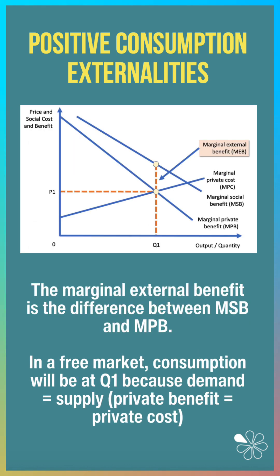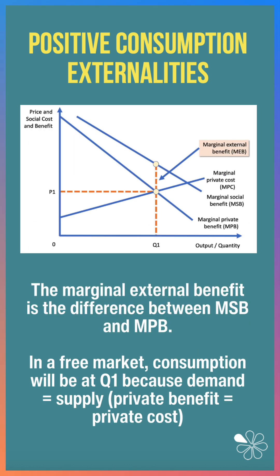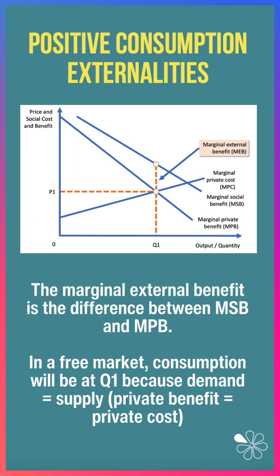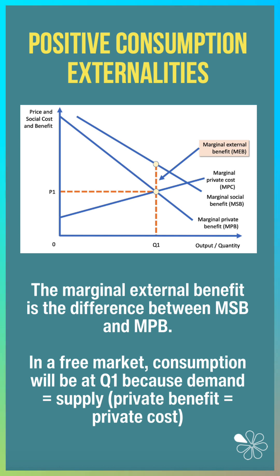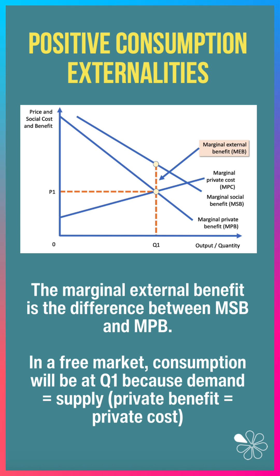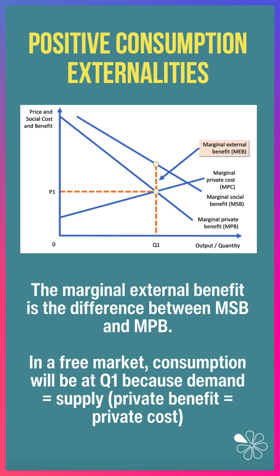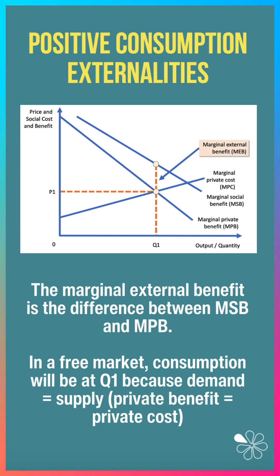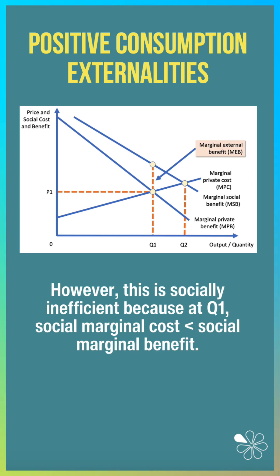The Marginal External Benefit, MEB, is the difference between marginal social benefit and marginal private benefit. In a free market, consumption will be at Q1 because demand equals supply. People only think about their own private benefits and costs.